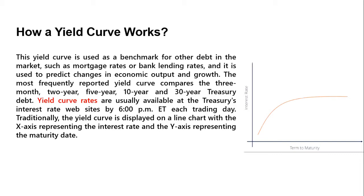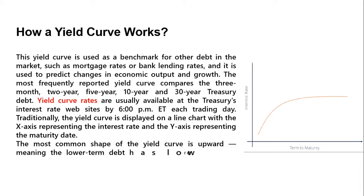Have a look at the graph. The graph displays a bond's yield on the vertical axis and the time to maturity across the horizontal axis. The most common shape of a yield curve is upward sloping, meaning lower term debt has a lower interest rate than longer term debt. I will tell you why later on in this video.